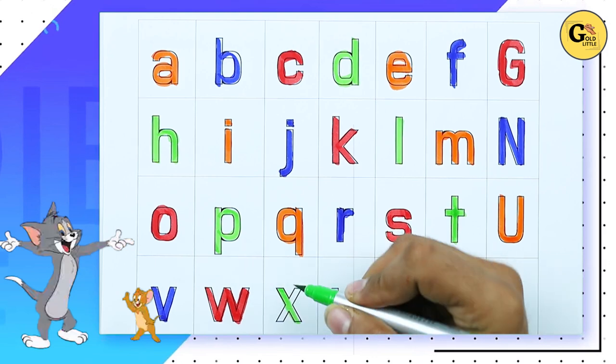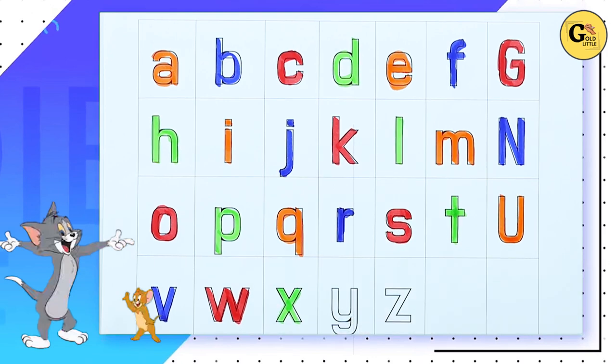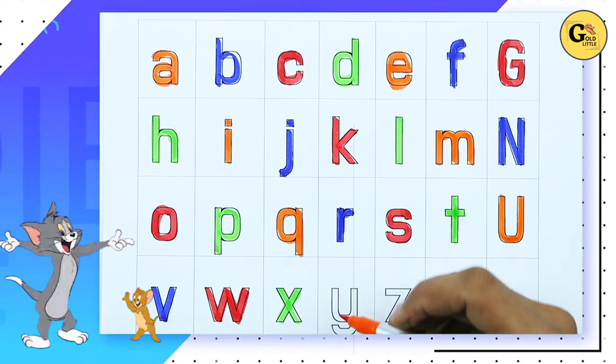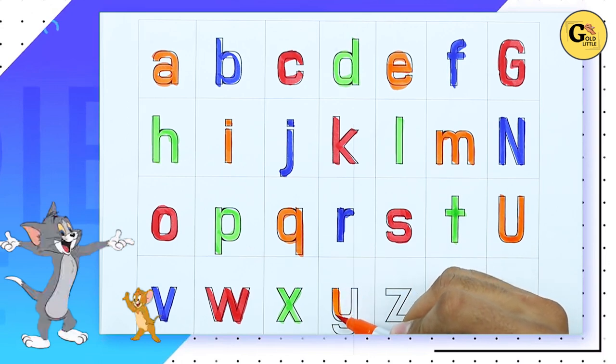X. Small X with green color. X for xylophone. Y. Y for yak. It's small Y. With orange color.